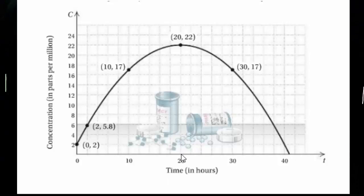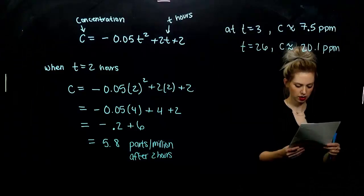Our estimations might be a little bit off. And then at 26, 26 hours after you've taken it, what is our approximated concentration at that point? So again, going over to 26, up to our polynomial, where is it hitting? Around maybe 20.1 parts per million at the 26 hour mark.